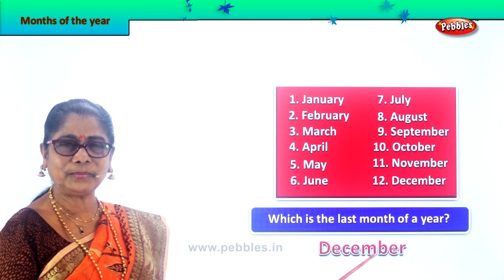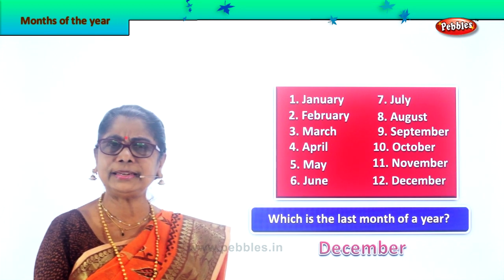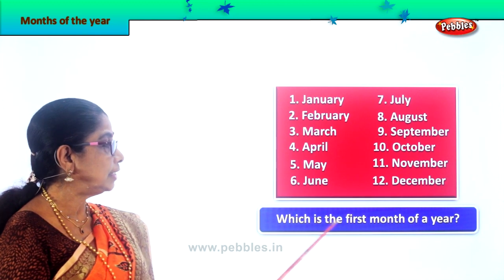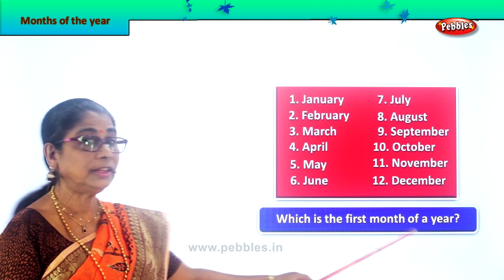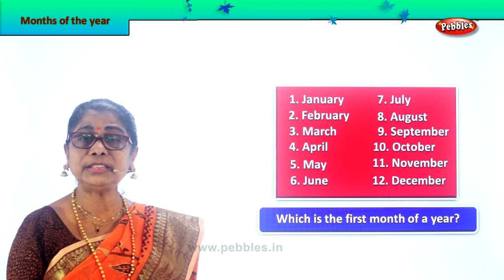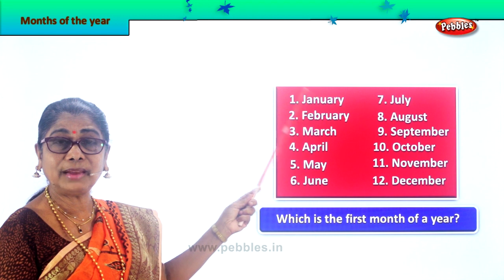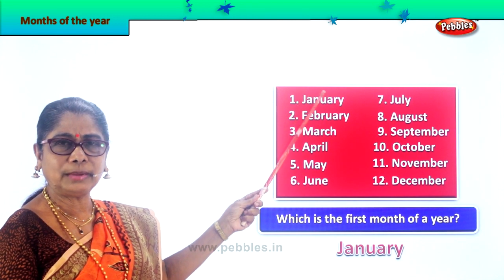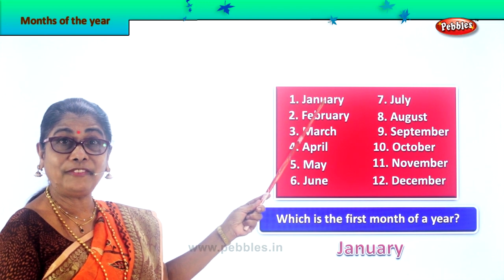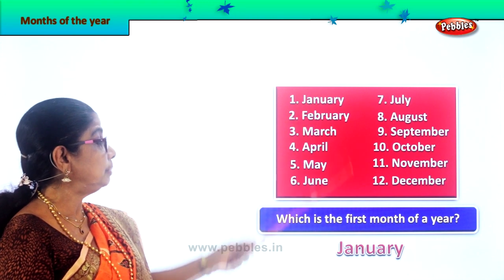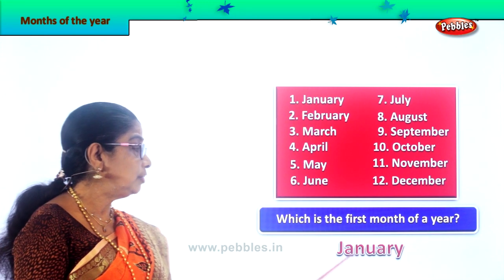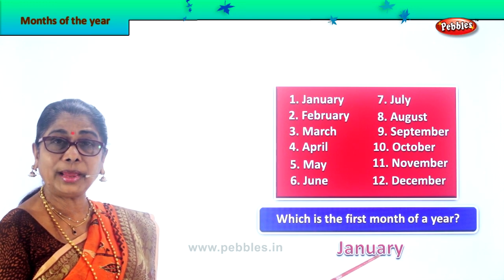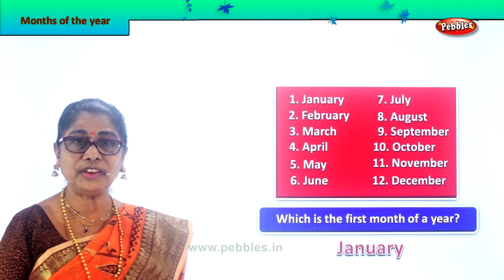Did you enjoy? Shall we take another question? Which is the first month of a year? The first month of a year is January, number one, first month. What do you think of January? When January comes — Pongal! So the first month of a year is January. Spell — J-A-N-U-A-R-Y, January.